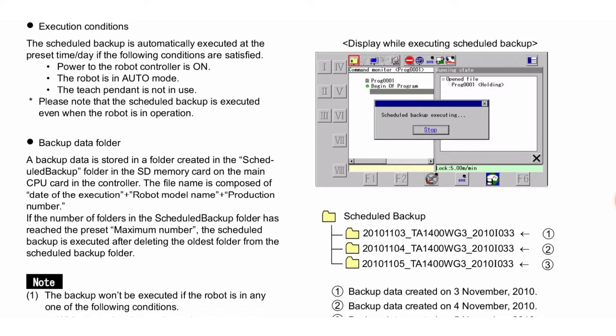Backup data folder: backup data is stored in a folder created in the scheduled backup folder on the SD memory card on the main CPU card in the controller. The file name is composed of the date of execution plus robot model name plus production number.